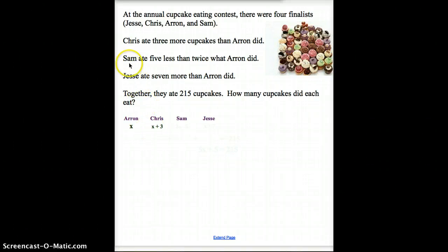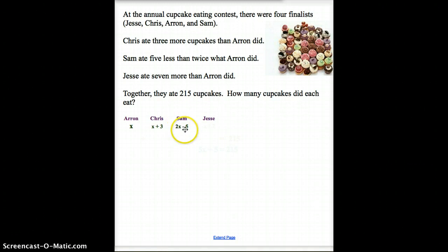Sam, right up here on the second one, Sam ate five less than twice what Aaron did. Now, a lot of students make the mistake and think, oh, that's five minus something. No, no, no. Five minus something isn't five less than something. You want to rewrite that the other way around. You want to first do that he ate twice as much, and then it was five less than whatever that amount was. So first do the multiplication part of the variable, then take five away from that. So it's two X minus five. Hopefully that makes sense. If not, come and ask me a question tomorrow. And then finally is Jesse. Jesse ate seven more than Aaron did. I'm willing to guess by now you should know what that is. If he ate what Aaron did plus seven more, that would be X plus seven.